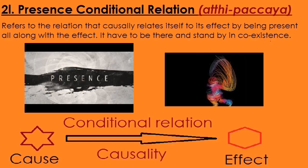Number 21 is the presence conditional relation — Atthi Pachaya. It refers to the relation where the cause relates itself to its effect by being present all along with the effect. The cause has to be there and stand by in co-existence with the effect. The relation between cause and effect is that they co-exist — they are present at the same time, and therefore one causes the other.